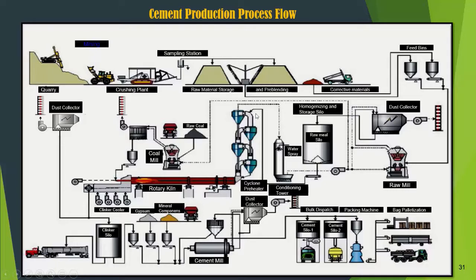The next process is the combustion process. Raw meal from the silo is fed to the kiln system using a bucket elevator to the feeding bin, then through scales to adjust the amount of feeding, and entered into the topmost cyclone preheater system. In this preheater system several processes occur including the drying process, separation process, heat transfer process, and decarbonization process — the decomposition of CaCO3 into CaO plus CO2. CaO is contained in the processed material while CO2 evaporates with the exhaust gases.